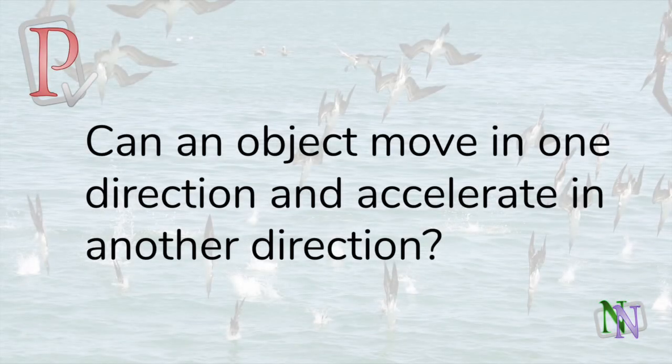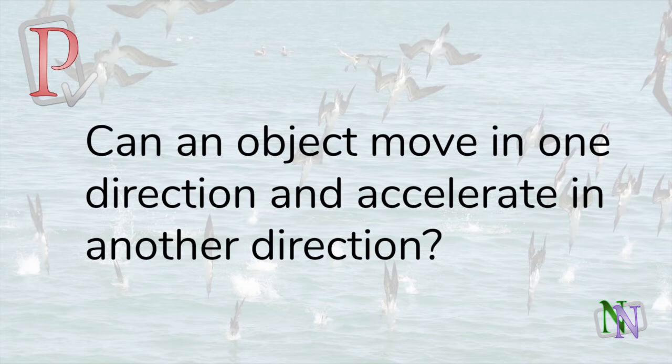Here is the puzzle we set at the start of the video. Can acceleration and velocity be in different directions at the same time? The answer is yes, and we just saw two examples. The car was driving north and then went east, but its acceleration was at an angle to the road. Also in the example with the diver, she was travelling downwards, but her acceleration was in the opposite direction — upwards.